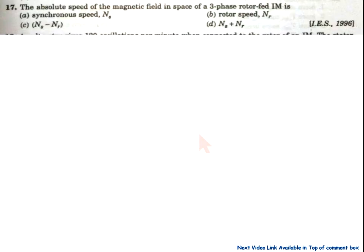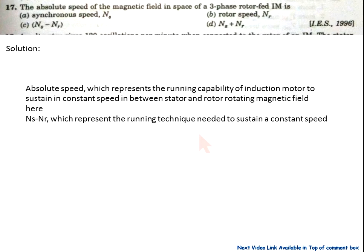Option B is correct. Now question 17: the absolute speed of the magnetic field in the space of a three-phase rotor-fed induction machine. The absolute speed represents the running capability of the induction motor to sustain constant speed between the stator and rotor rotating magnetic fields — that is Ns minus Nr — which represents the technique needed to sustain constant speed. So answer C is correct.